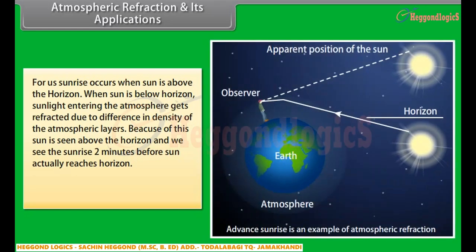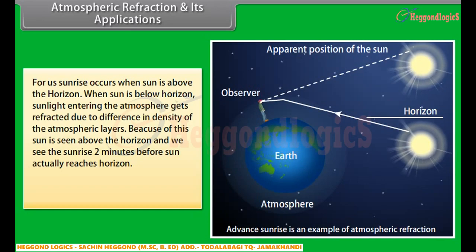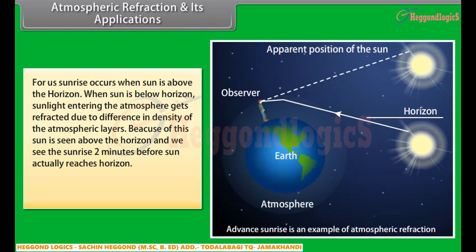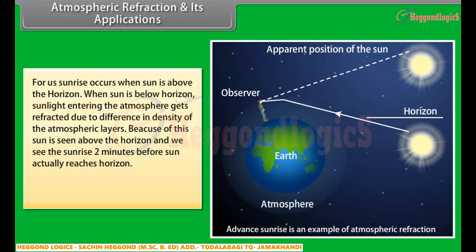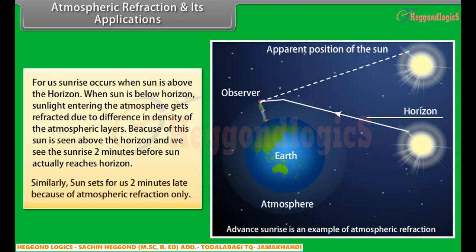For us, sunrise occurs when the sun is above the horizon. When the sun is below the horizon, sunlight entering the atmosphere gets refracted due to difference in density of the atmospheric layers. Because of this, the sun is seen above the horizon and we see the sunrise two minutes before the sun actually reaches the horizon. Similarly, the sun sets for us two minutes late because of atmospheric refraction.